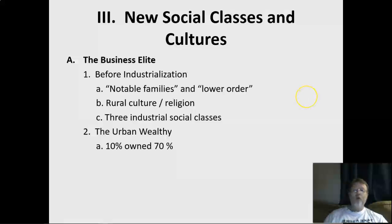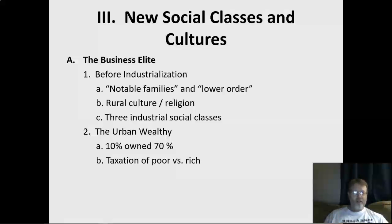Industrialization creates a very distinct change between urban and rural life. Most of the wealth was in the cities, and 10% of the population owned 70% of all the wealth — this is 1860. In America today, 1% of the population owns 90% of all the wealth, which is really crazy. Back then, 10% owning 70% was already absurd — more money than they could spend in 10 lifetimes. These were not just wealthy people; they were extraordinarily wealthy.